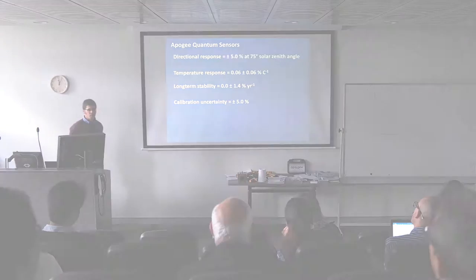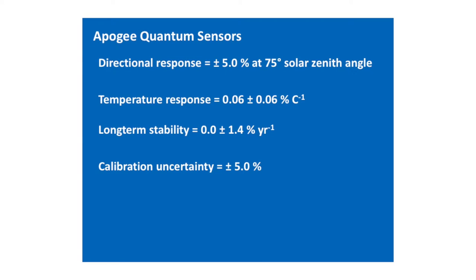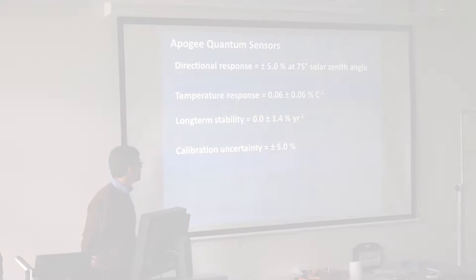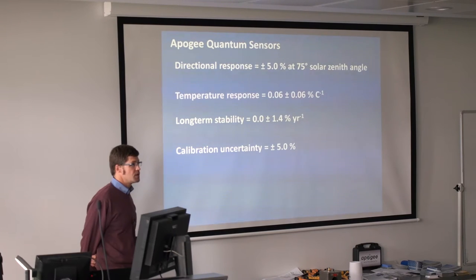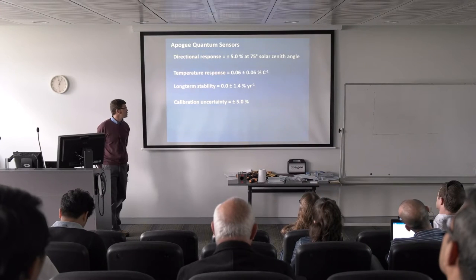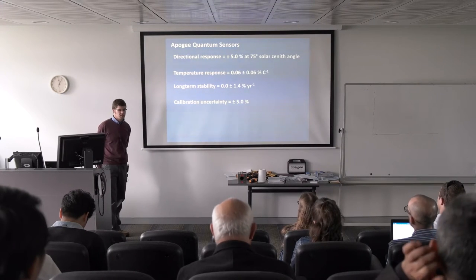Here's a specifications table for Apogee quantum sensors, similar to what Bruce showed for pyranometers. The directional response and cosine response for a quantum sensor are very similar to those of a pyranometer. The temperature response is also similar. Stability is a little better for the quantum sensors tested, and calibration uncertainty is listed in the table.